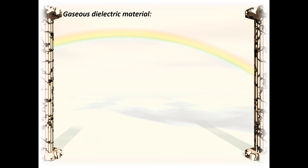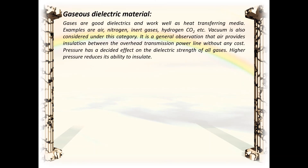Gases are good dielectrics and work well as heat-transferring media. Examples are air, nitrogen, inert gases, hydrogen, and carbon dioxide. Vacuum is also considered under this category. Air provides insulation between overhead transmission power lines without any cost. Pressure has a decided effect on the dielectric strength of all gases — higher pressure reduces their ability to insulate.